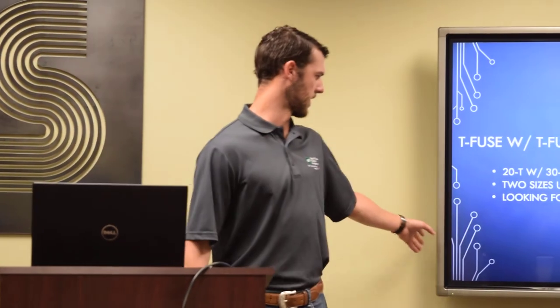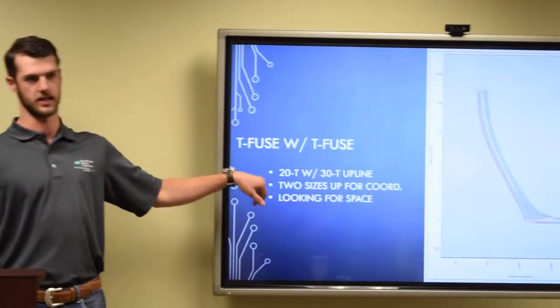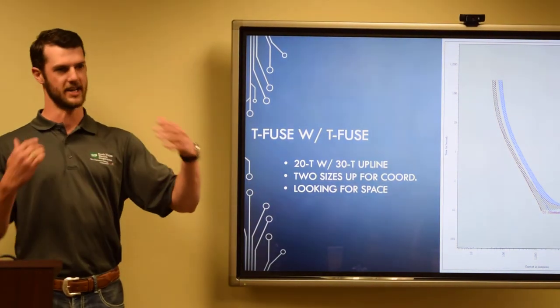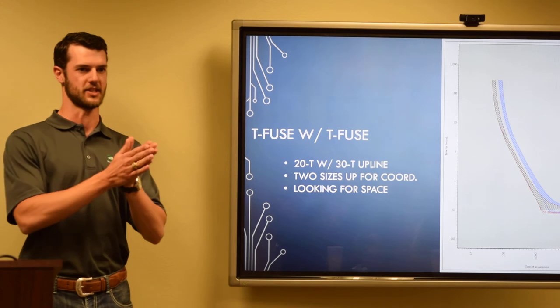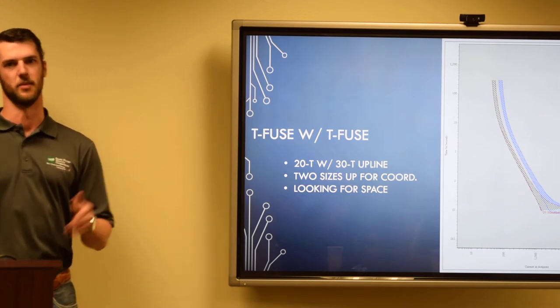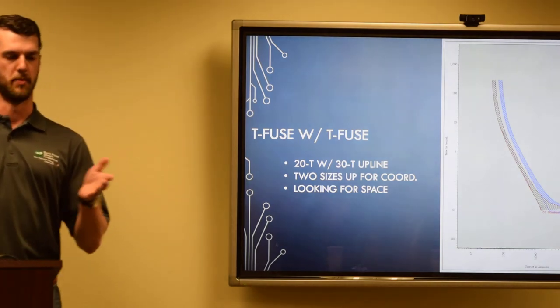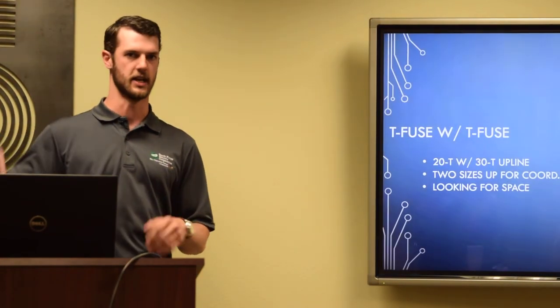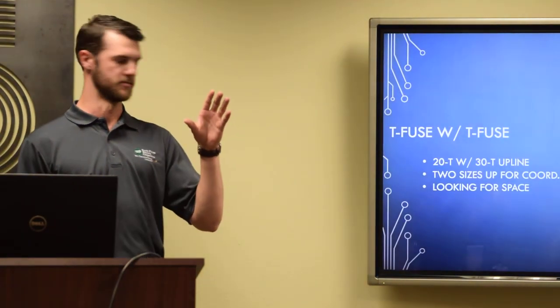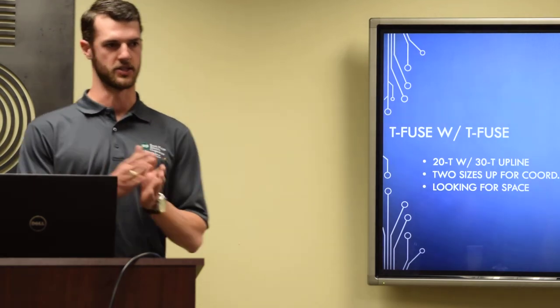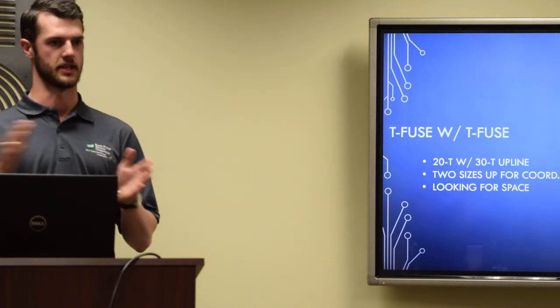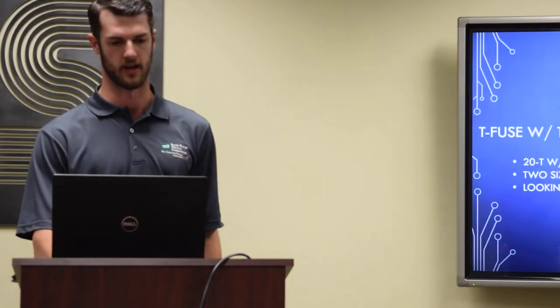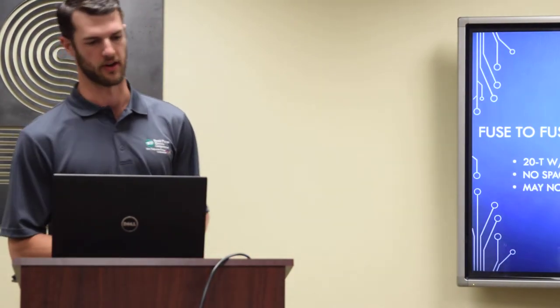When you're out in the field too, this is a good way to double check us that we're not just making up crap. When you're sizing two T fuses, you can usually just go two sizes up for the upline fuse. And that should be about where you want to be. That falls apart a little bit on the really big stuff. But your 10s, 20s, everything just go up two sizes in T fuses, and that's what you should need for coordination. That's a good rule.